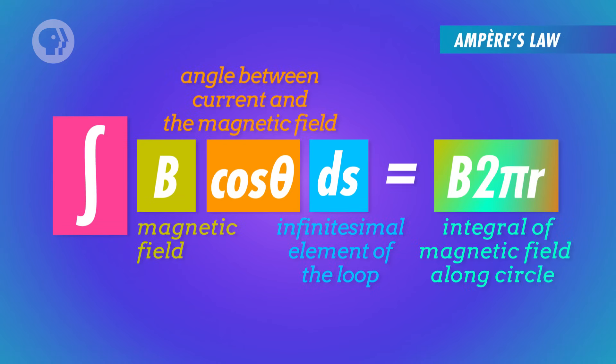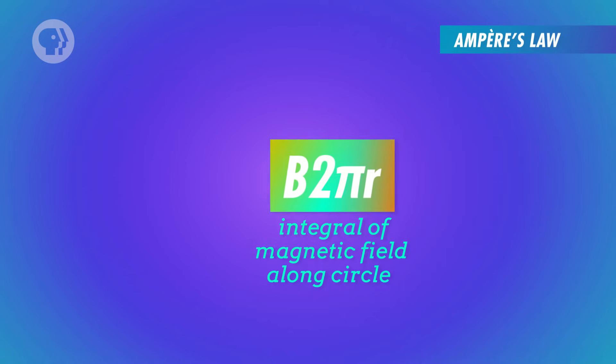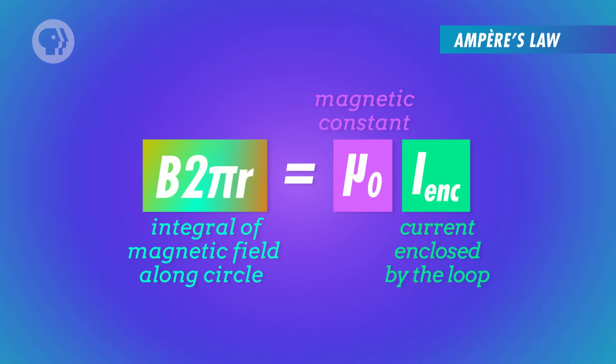Putting that all together, we find that when we apply Ampère's law to a long straight wire, the total magnetic field along a circle surrounding a wire is equal to B times 2 times pi times the radius. And that total magnetic field is equal to the magnetic constant times the enclosed current.